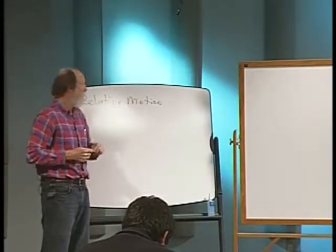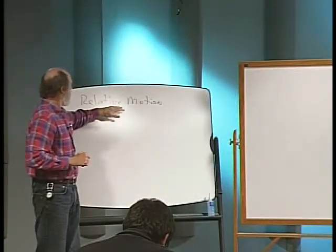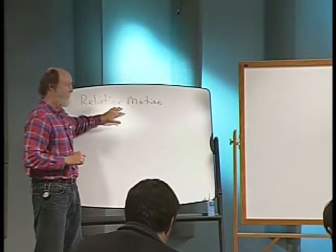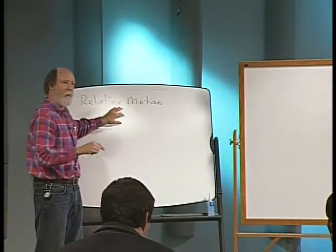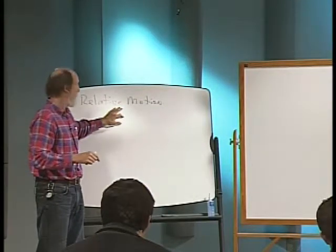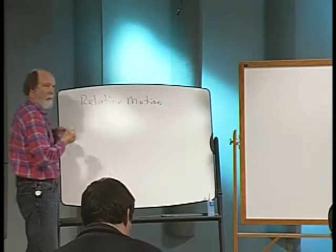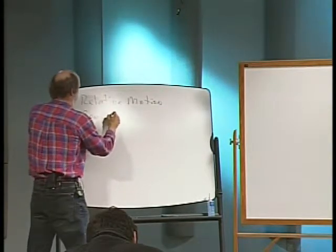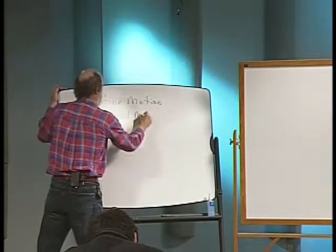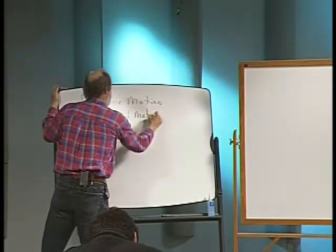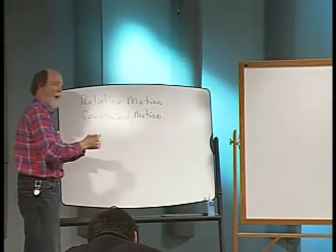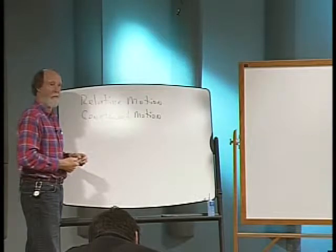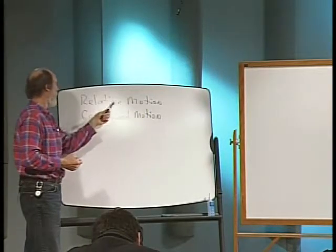Okay, today we're going to start by doing a problem or so on relative motion and maybe it might take a few minutes to see if you have questions about recent homework. And then the other topic we want to get into today is constrained motion, where one body frequently is hooked to another body, usually through a cable type of linkage.